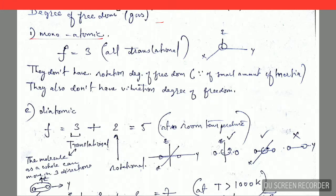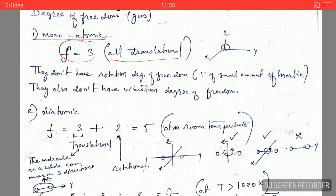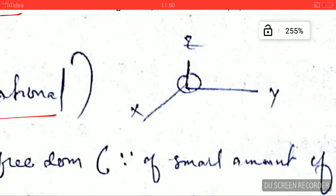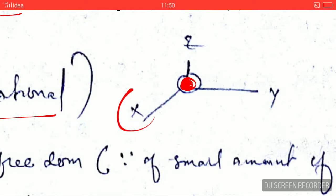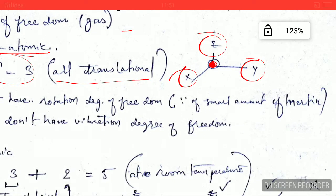In monoatomic gas, the gas is made up of individual atoms. The degree of freedom in monoatomic gas is three, and it includes all the translational motion. If there is an atom at the center, then it can move in three directions, namely X, Y, and Z. So it can have three translational motions, meaning the degree of freedom will be three.